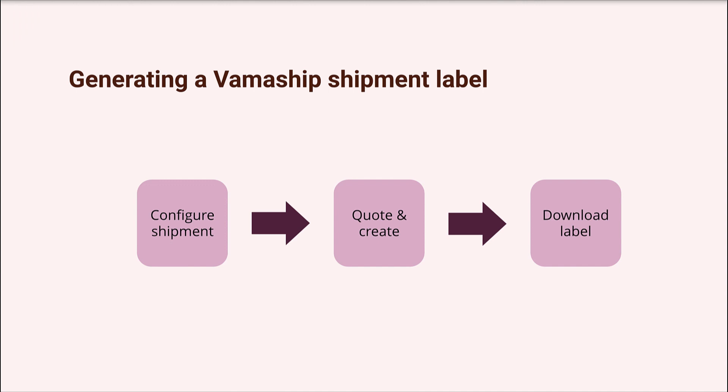This will open a shipment configurator window wherein each shipment will go through three phases. Phase one is the Shipment Details phase, where you will provide the sales order, package, and customer information. Phase two is the Shipment Quote step, where the system will provide the ideal option for you along with the rate. Finally, phase three is the Shipment Creation step, where you can download and print a copy of your shipment label.